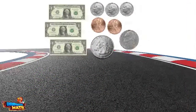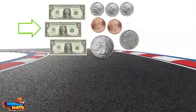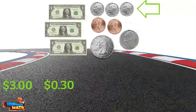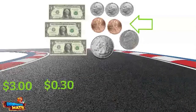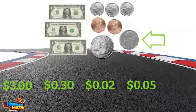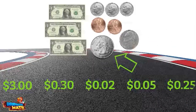Sometimes other coins will be in the mix and you can't just state the number of dimes as the digit in the tenths place. In this collection of money, there are three one dollar bills worth three dollars in all, three dimes worth ten cents each or thirty cents in all, two pennies worth one cent each or two cents in all, one nickel worth five cents, and one quarter worth twenty five cents.